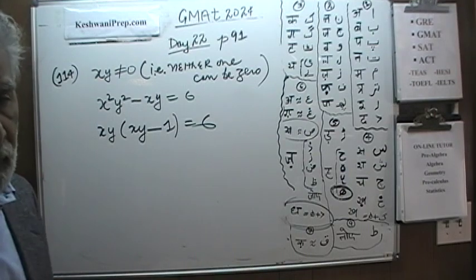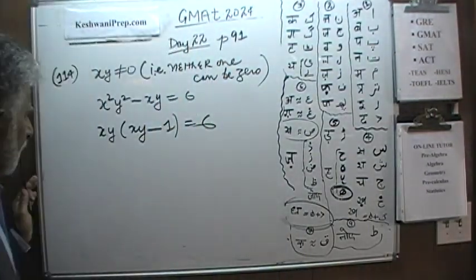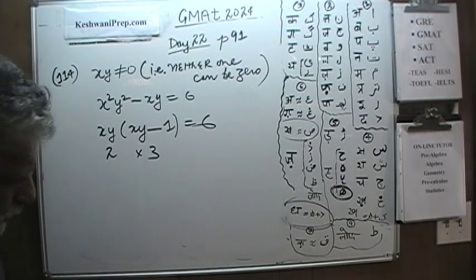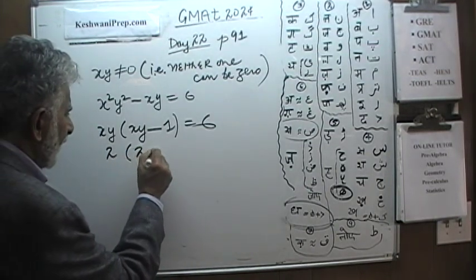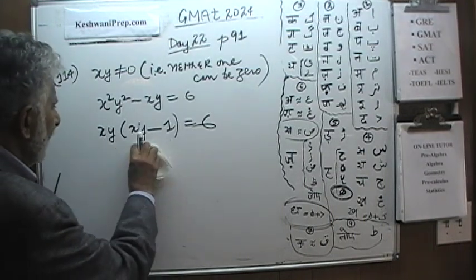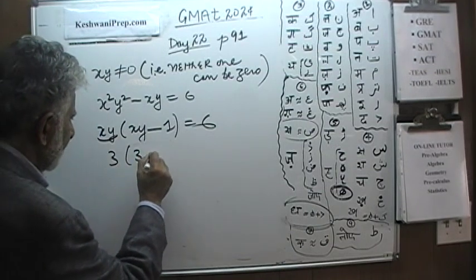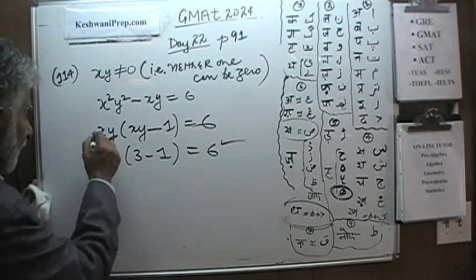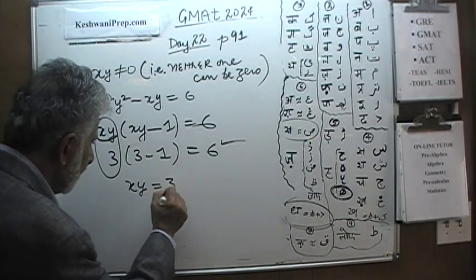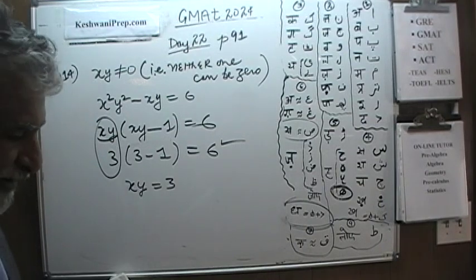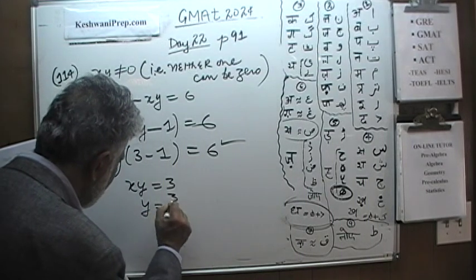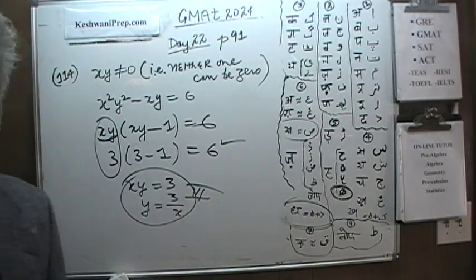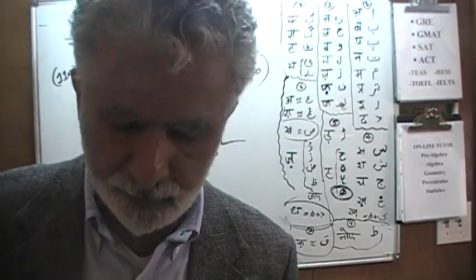Since the product is 6, there aren't too many possibilities. It can be 2 times 3, but if xy is 2, then 2 minus 1 gives us 1, not 6 — that doesn't work. But xy can be 3: 3 times 3 minus 1 gives us 6. That works. So xy could equal 3. The question asks which could be y in terms of x. If you solve for y, y is equal to 3 over x — and that was statement number 3. Right away you can knock out all answer choices which do not have 3 in it.